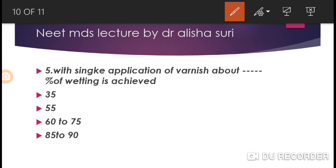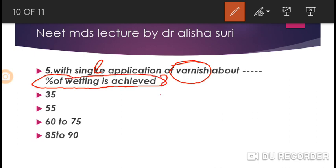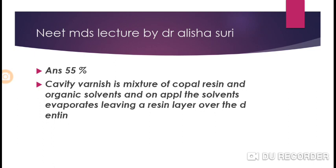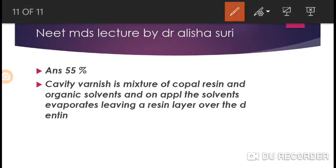The last question of today's video: with a single application of varnish, how much percentage of wetting is achieved when we apply it onto the tooth surface? In other words, if we apply only one layer of varnish, how much wetting do we get? The options are 35%, 55%, 60–75%, and 85–90%. The answer is 55 percent.